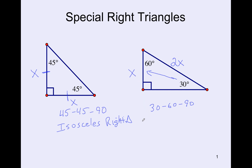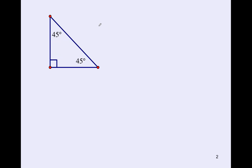Let's try a couple of problems. You'll need a piece of paper, a pencil, and a calculator. Take notes, solve these problems, and you'll be able to do all of our assigned problems. Let's focus on the 45-45-90 right triangle first.